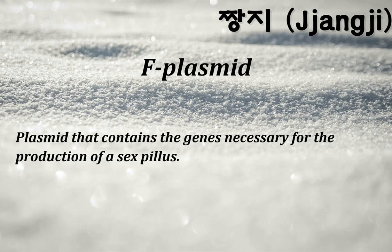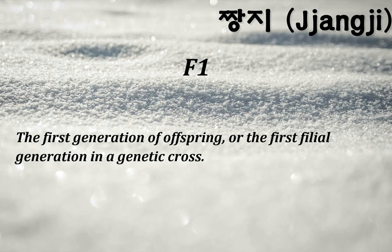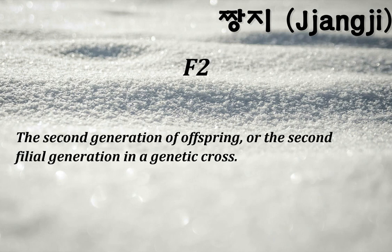F plasmid: a plasmid that contains the genes necessary for the production of a sex pilus. F1: the first generation of offspring, or the first filial generation in a genetic cross. F2: the second generation of offspring, or the second filial generation in a genetic cross.